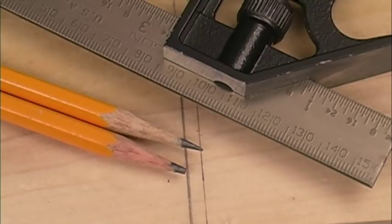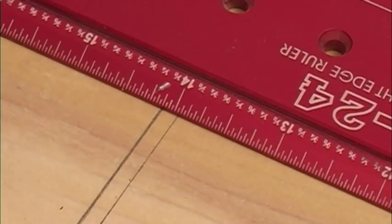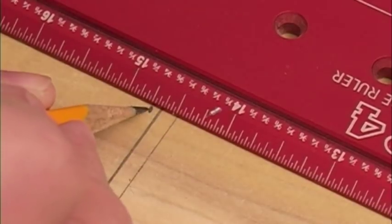Something as simple as using a sharp pencil as opposed to a dull one can change how your projects come out. Woodpeckers taper the edge in his rule to bring the numbers right down to the wood because it's easier to get an accurate mark that way.